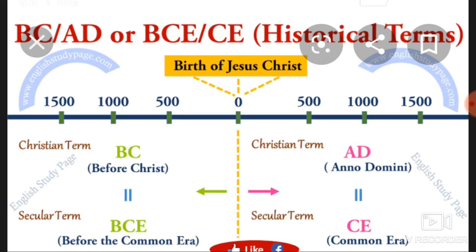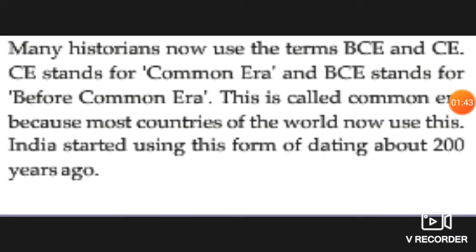Sometimes CE is used in place of AD. CE means Common Era, which refers to the period after the birth of Jesus. Many historians also use the term BCE for BC, which stands for Before Common Era.